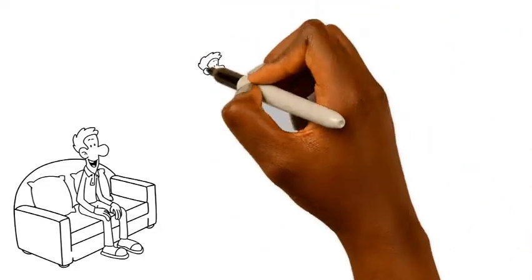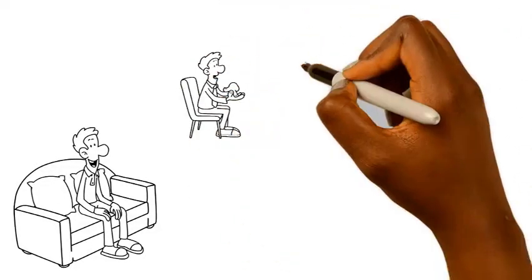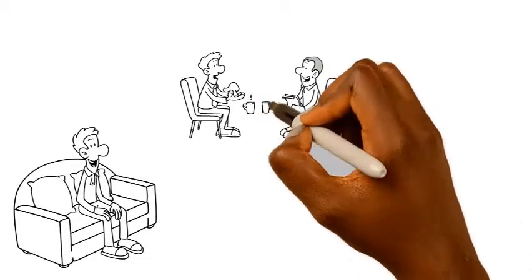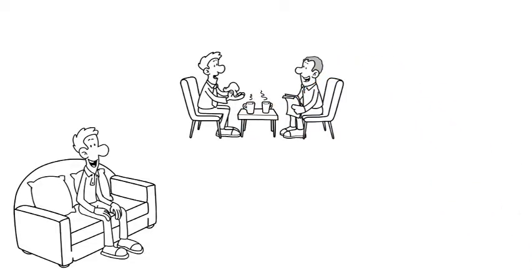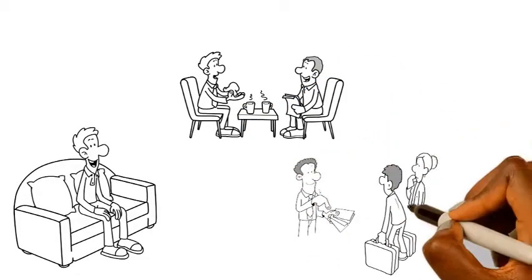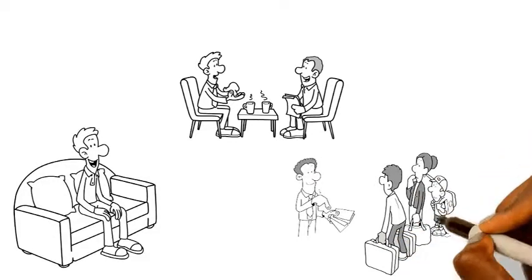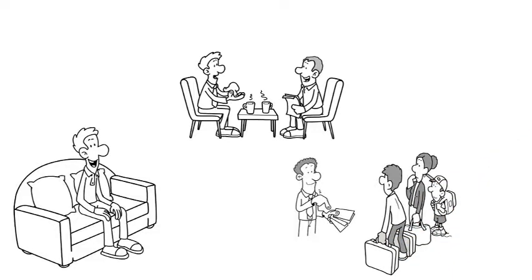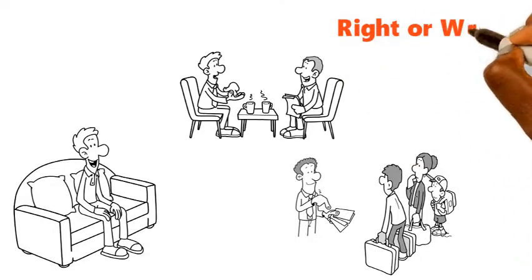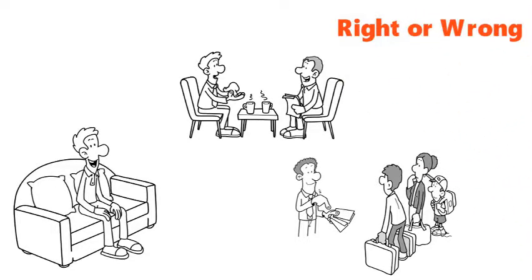Scenario 3. A company wants to win a government contract. The company promises to pay for a holiday for the head of the contract awarding board and his entire family should he be awarded the contract. Is the company acting right? What do you think is wrong?